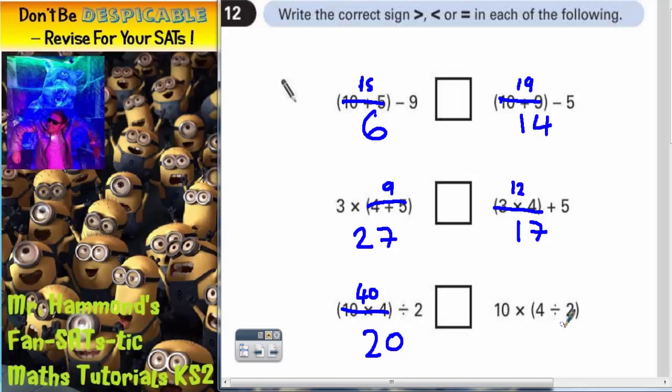This one, we have to do the bracket first. We do not do 10 times 4 first. Got to do the bracket first. 4 divided by 2 is 2. So it's 10 times by whatever's in the bracket, which is 2. So it's 10 times by 2, which is 20.